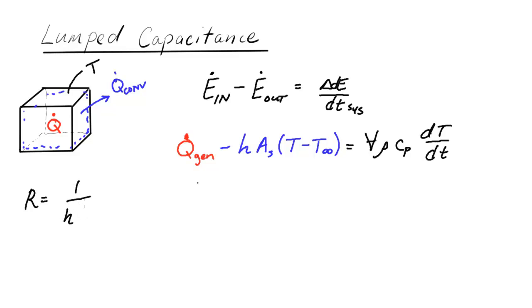the convection coefficient times the surface area. And the second substitution is we're going to define this capital C for capacitance equal to the volume times density times the specific heat.